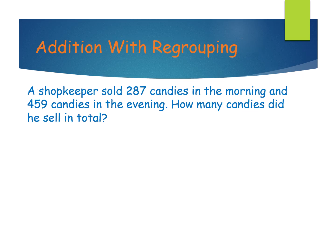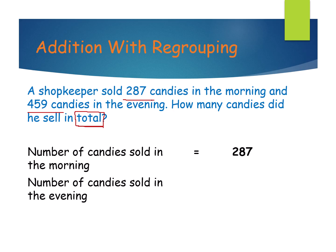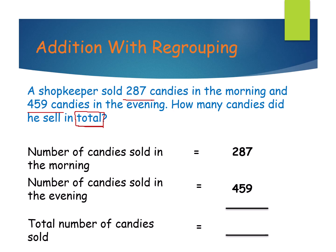Next example: addition with regrouping. A shopkeeper sold 287 candies in the morning and 459 candies in the evening. How many candies did he sell in total? Here also we are using the 'total' keyword, which means do addition. Number of candies sold in the morning: 287. Number of candies sold in the evening: 459. Total number of candies sold.